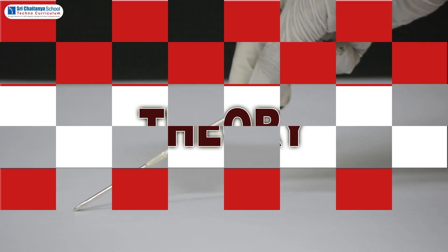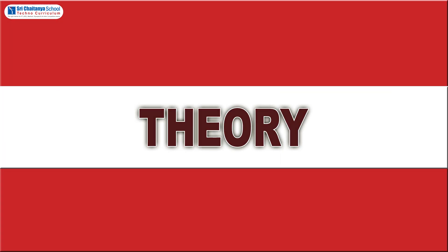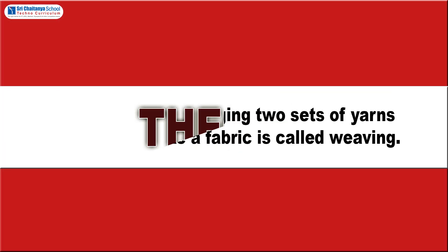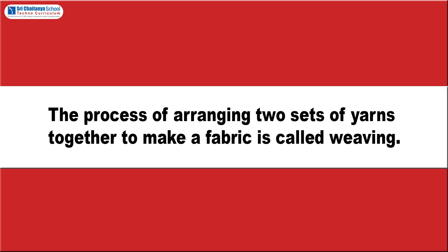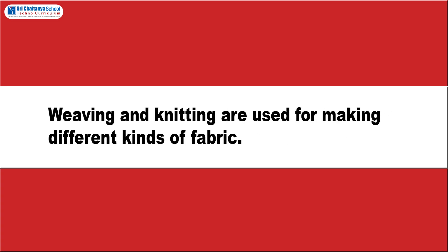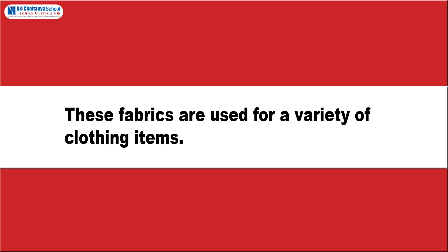The theory of this experiment is: the process of arranging two sets of yarns together to make a fabric is called weaving. Weaving and knitting are used for making different kinds of fabric. These fabrics are used for a variety of clothing items.